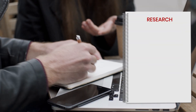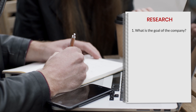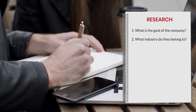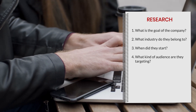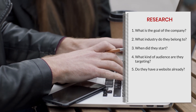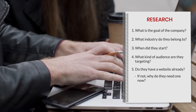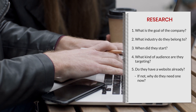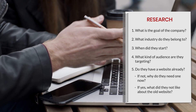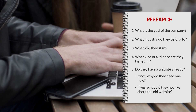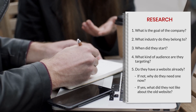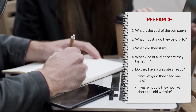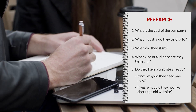Step number one is to start researching about the company. Make sure that you know the following: What is the goal of the company? What industry do they belong to? When did they start? What kind of audience are they targeting? Do they have a website already? If not, why do they need one now? If yes, what did they not like about the old website? Once we collect all this data, we are going to zero in on a very important decision: what is the objective of this site?